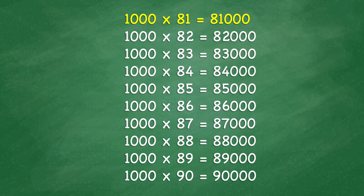1,000 x 81 equals 81,000. 1,000 x 82 equals 82,000. 1,000 x 83 equals 83,000. 1,000 x 84 equals 84,000. 1,000 x 85 equals 85,000. 1,000 x 86 equals 86,000. 1,000 x 87 equals 87,000. 1,000 x 88 equals 88,000.